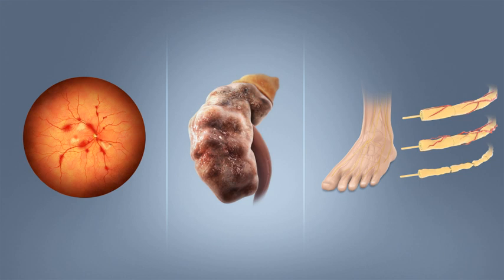Untreated GDM can damage the health of the fetus or mother. Risks to the baby include macrosomia (high birth weight), congenital heart and central nervous system abnormalities, and skeletal muscle malformations. Increased levels of insulin in a fetus's blood may inhibit fetal surfactant production and cause infant respiratory distress syndrome. A high blood bilirubin level may result from red blood cell destruction. In severe cases, perinatal death may occur, most commonly as a result of poor placental perfusion due to vascular impairment. Labor induction or cesarean section may be indicated in certain cases.